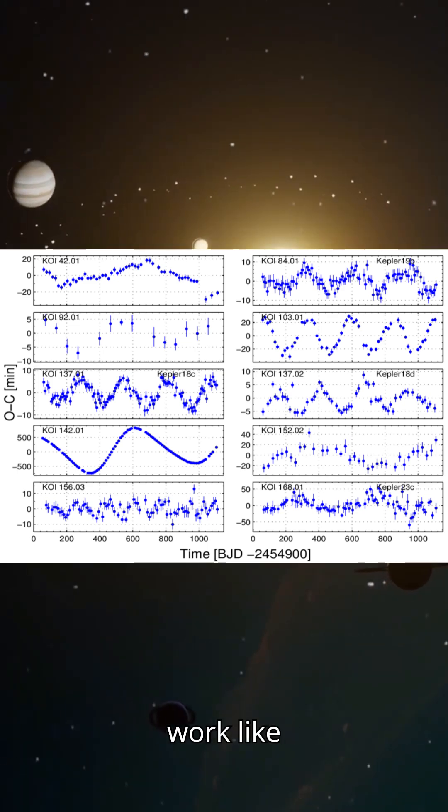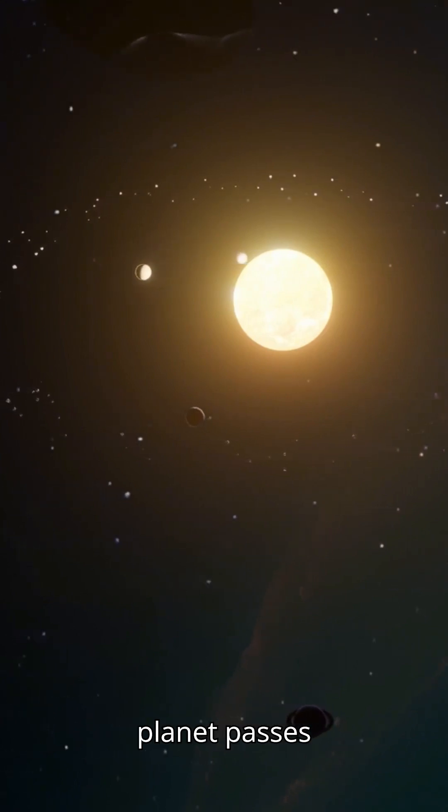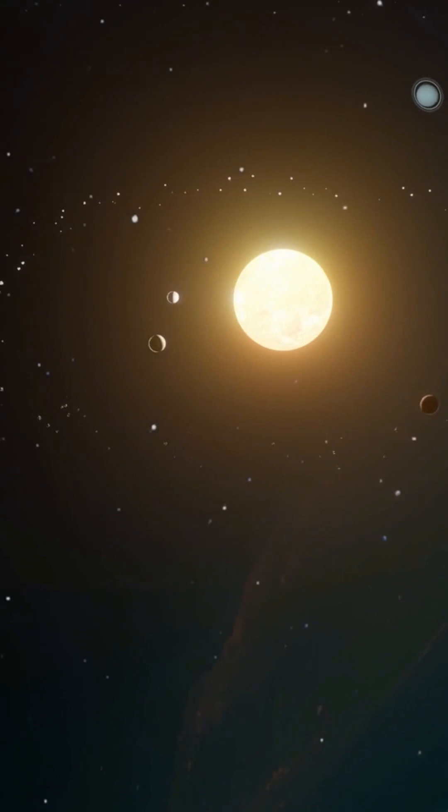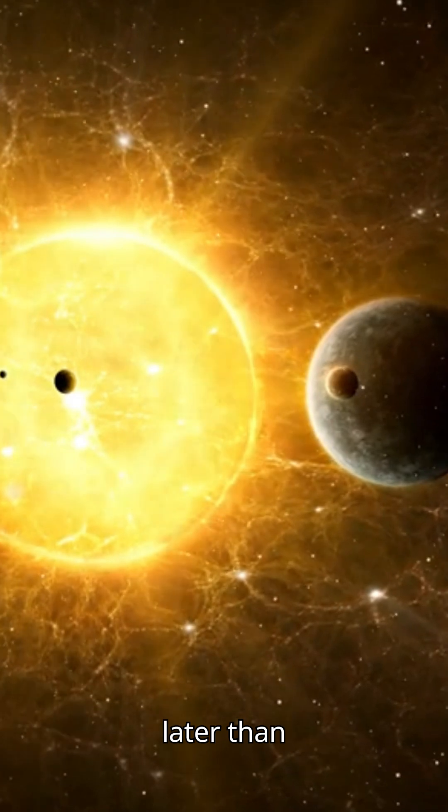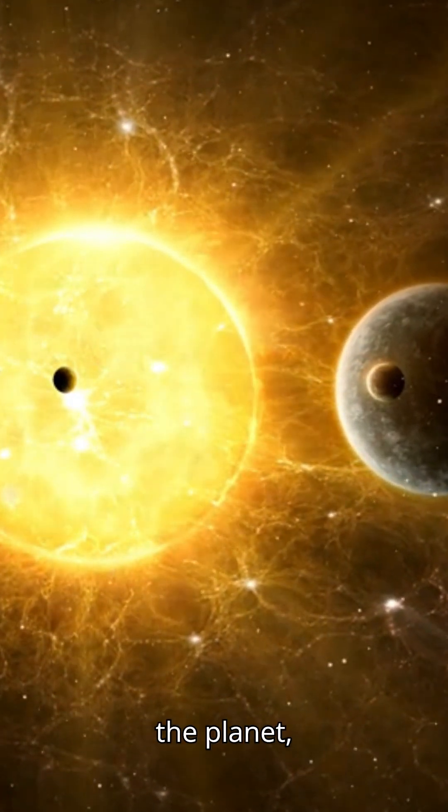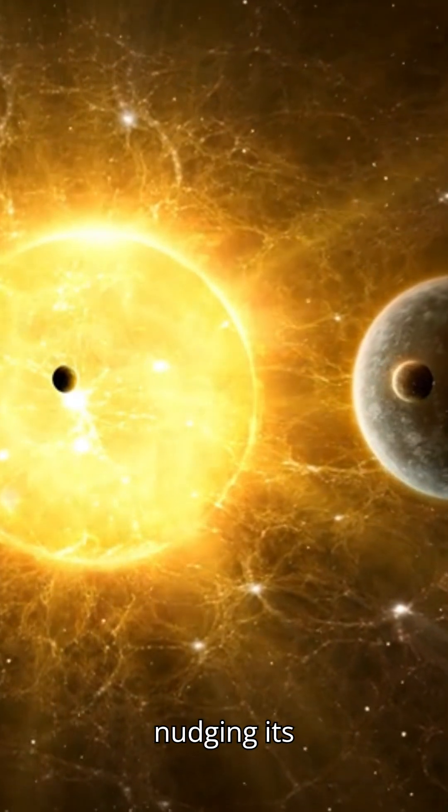TTVs work like this. When a planet passes in front of its star, we see a tiny dip in brightness. If the timing of these dips starts shifting, arriving earlier or later than expected, it suggests that something else is tugging on the planet, gravitationally nudging its orbit.